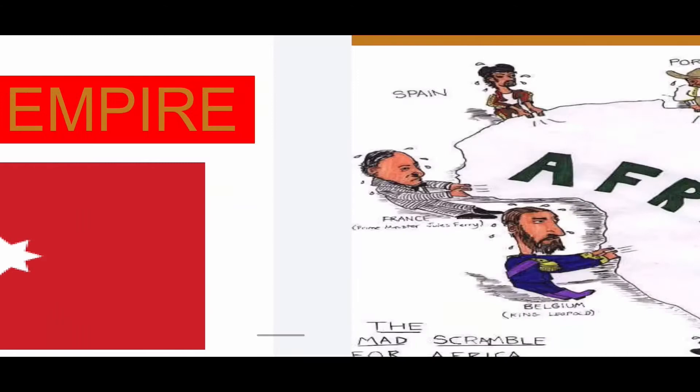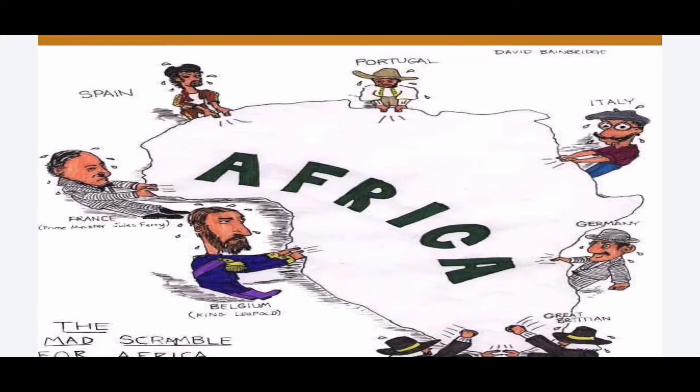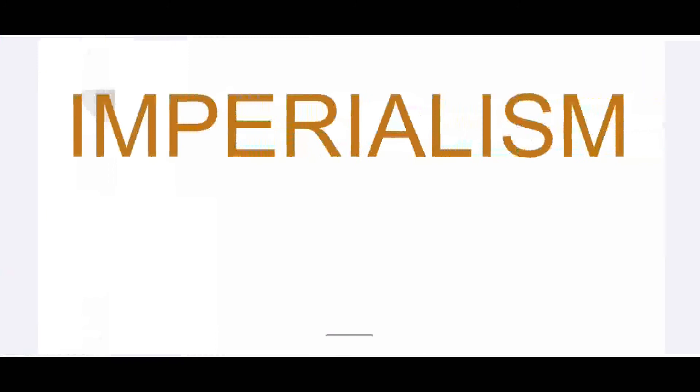We do know that the Ottoman Empire does decline and eventually wane. A big majority of the reason is how the Europeans became stronger — they became westernized in a sense. Many of the great powers of Europe became stronger. They controlled more of the resources, and a lot of that influence negatively affected the Ottoman Empire, causing them to lose the majority of their control and the majority of their lands.